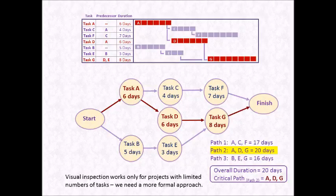Furthermore, through a visual inspection, we can tell that the duration of path 2 — that's tasks A, D, and G — is the longest at 20 days, and thus forms what we call the critical path. As tasks A, D, and G are now the critical path, it tells us that any delays on any of these tasks will delay the overall duration of the project on a one-to-one basis. We can also see that some slack exists in the other two paths. For example, on path 3 — that's tasks B, E, and G — it has a duration of only 16 days. This means that there is four days of slack existing in this path. Tasks B and E can be delayed for a few days or experience schedule slippages without affecting the overall duration of the project.